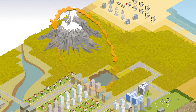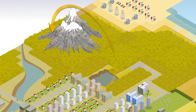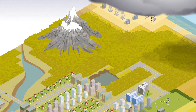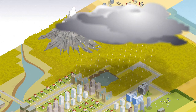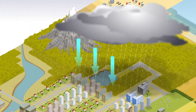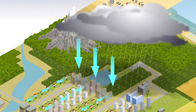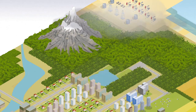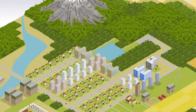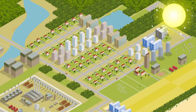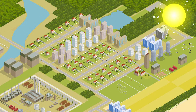Thus, droughts are not always the result of natural climatic conditions. The tension that exists between availability and the demand for water with men and their needs for agriculture and livestock increases the risk of drought. Other human activities like the building of swimming pools, watering of lawns, and washing of cars also often aggravate drought conditions.